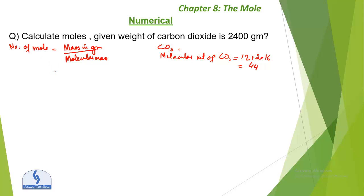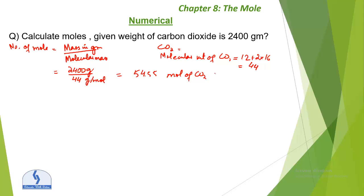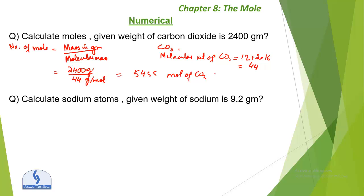Now applying the formula: number of moles of CO₂ equals mass in grams (which is 2400 g) divided by the relative molecular mass (which is 44 g/mol). The units cancel out, and the result is 54.55 moles of carbon dioxide.